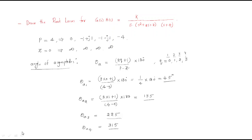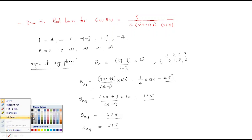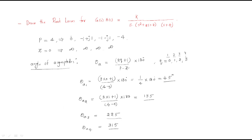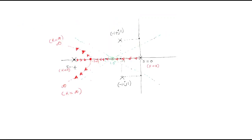In the last session we discussed root locus for two poles: s equal to 0 and s equal to minus 4. These two are on the real axis, which is why there is a breakaway point at minus 3.09, and the root locus follows two asymptotes.